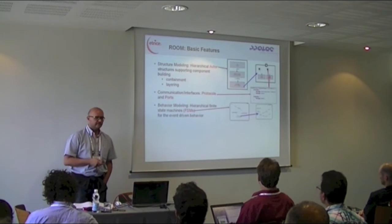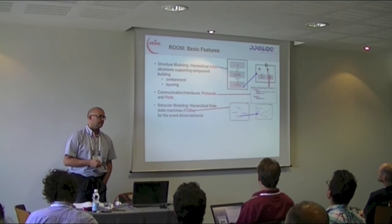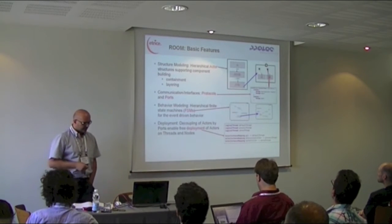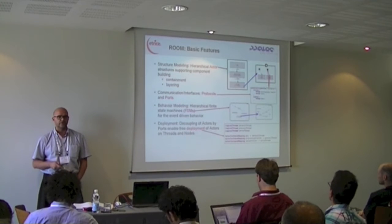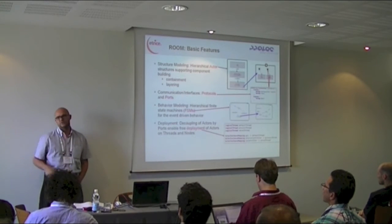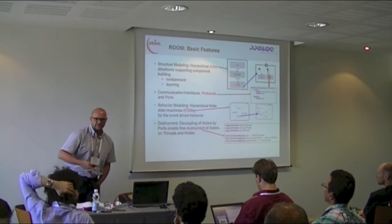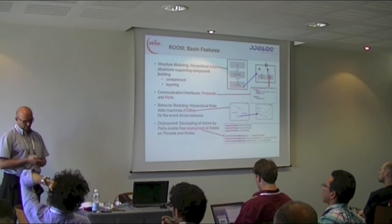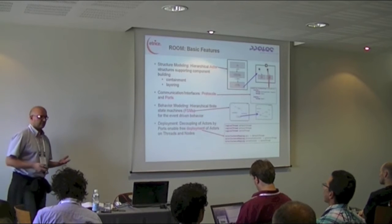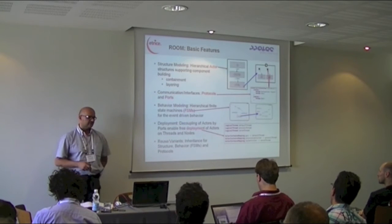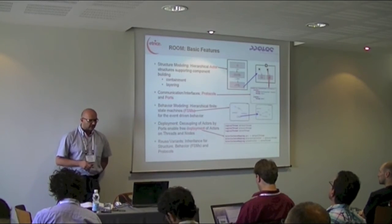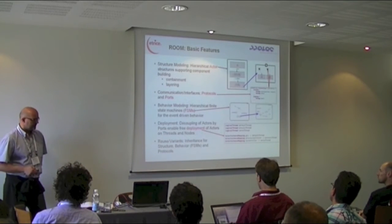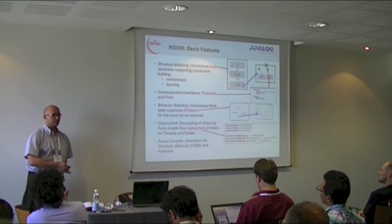We have behavior modeling with hierarchical finite state machines for event-driven behavior. You can also place manual code inside an actor or any other implementation if you provide an interface for it. The deployment model enables you to deploy each actor class to a node or a thread. To support reuse and variants, you can inherit basically every modeling element, including behavior and finite state machines — you can inherit them and add states or change things.